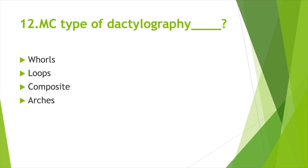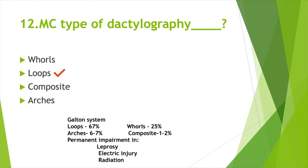Most common type in dactylography — Option A: Whorls, Option B: Loops, Option C: Composite, Option D: Arches. Answer: Option B, Loops. Dactylography is also known as the Galton system. Loops: 67%; Whorls: 25%; Arches: 6–7%; Composite: 1–2%. Fingerprint permanent impairment occurs in leprosy, electric injury, and radiation.